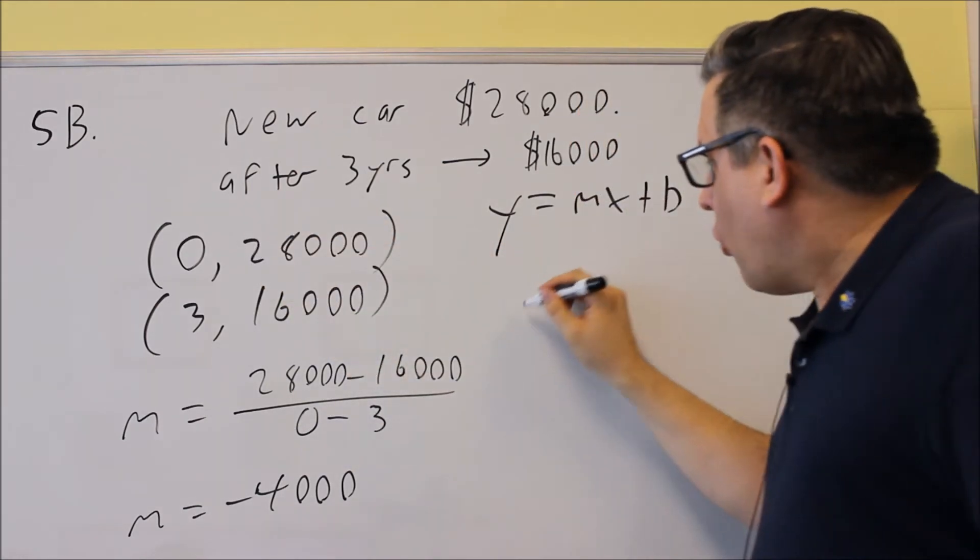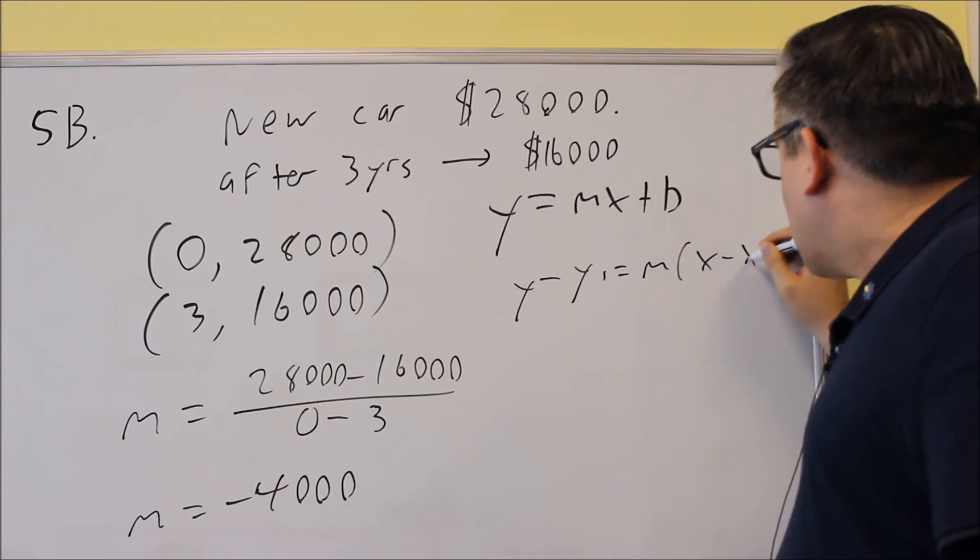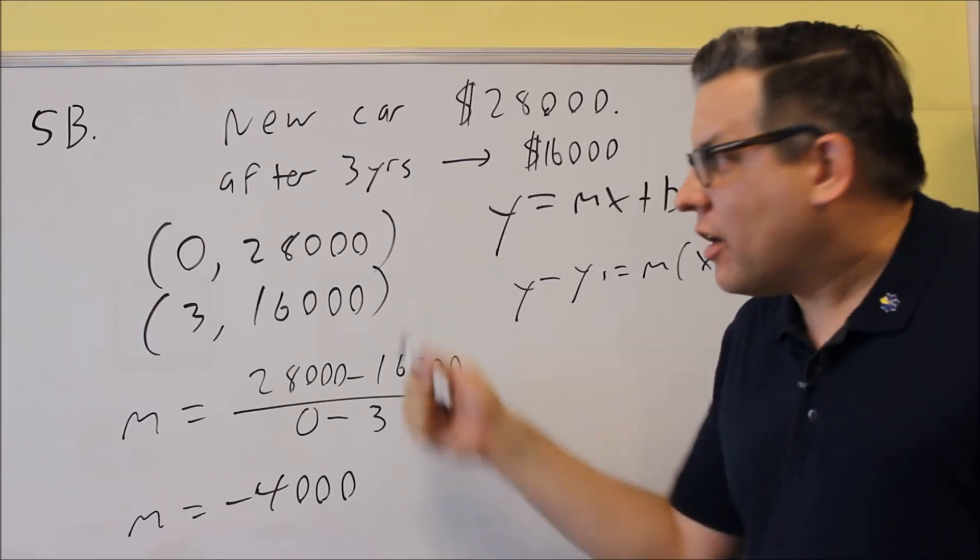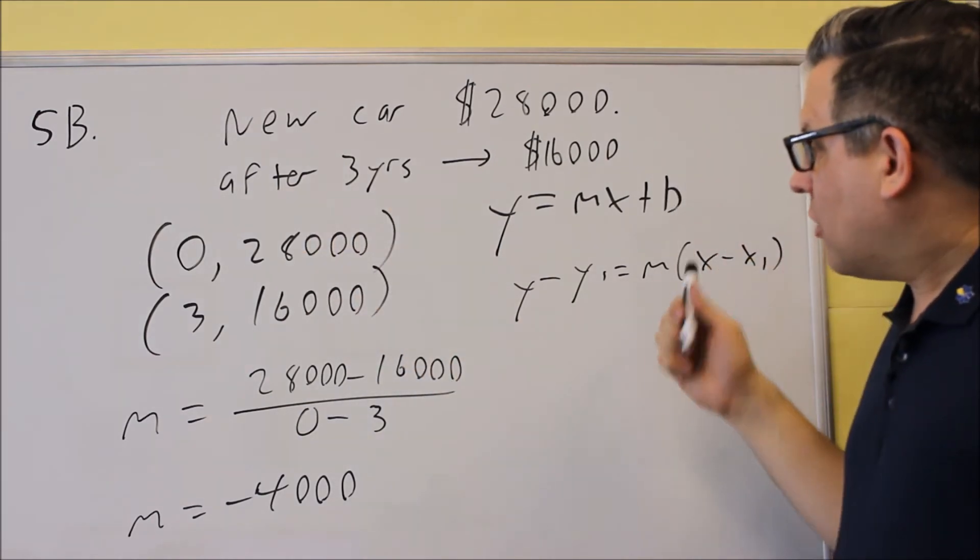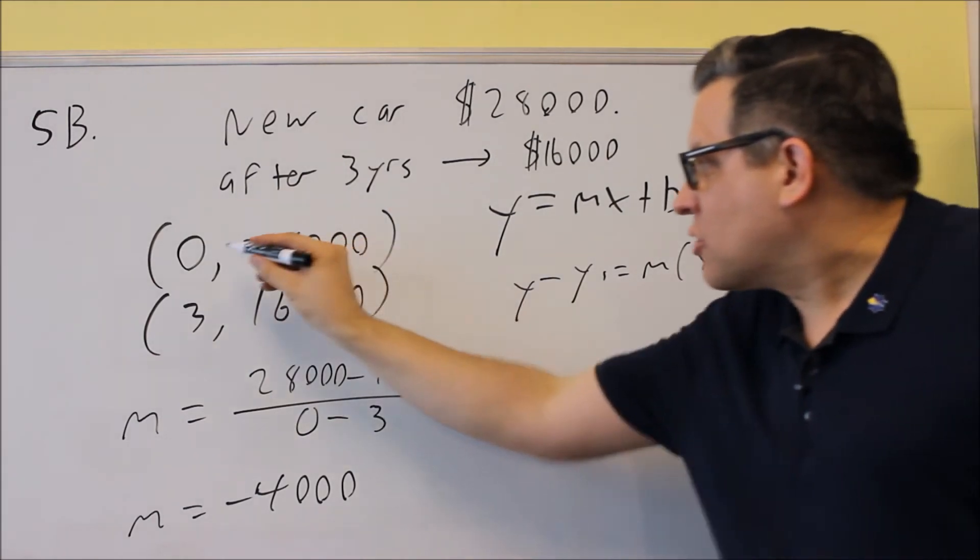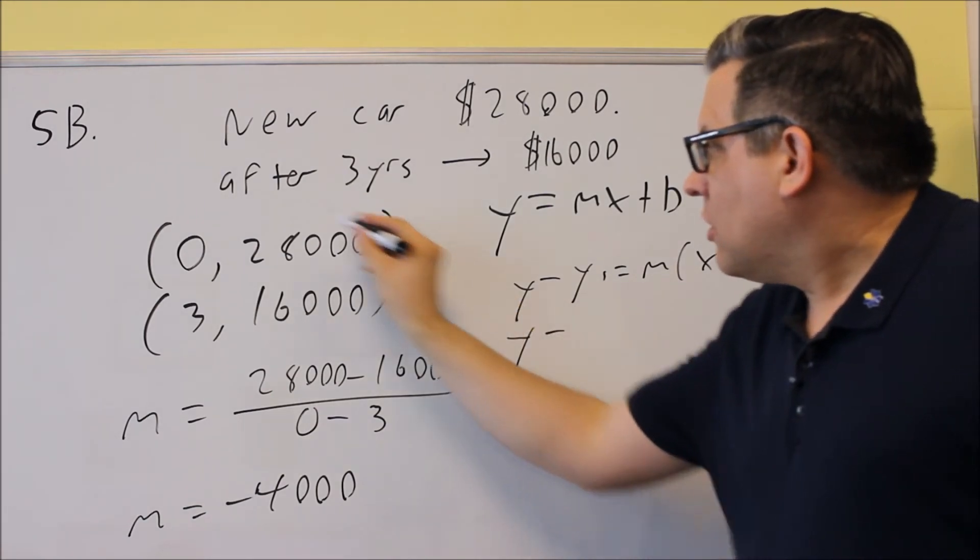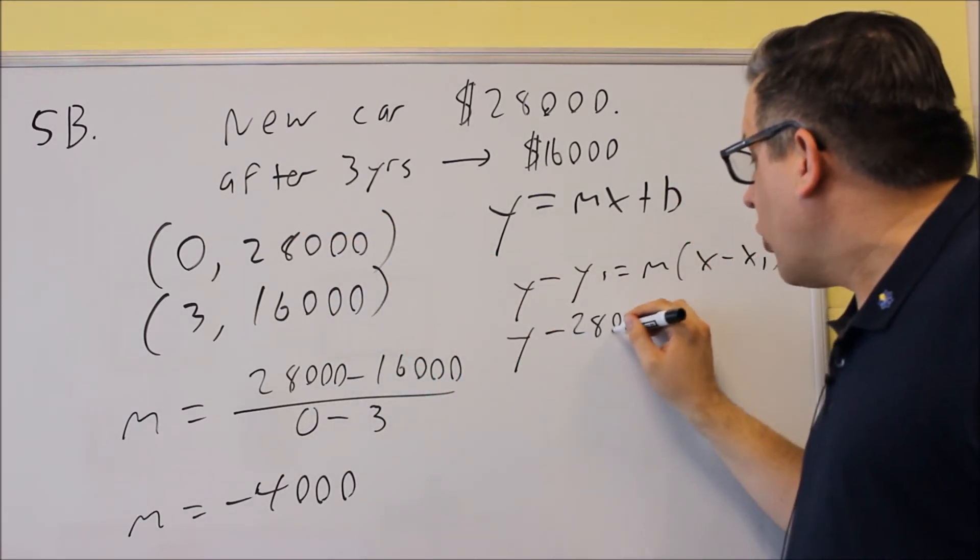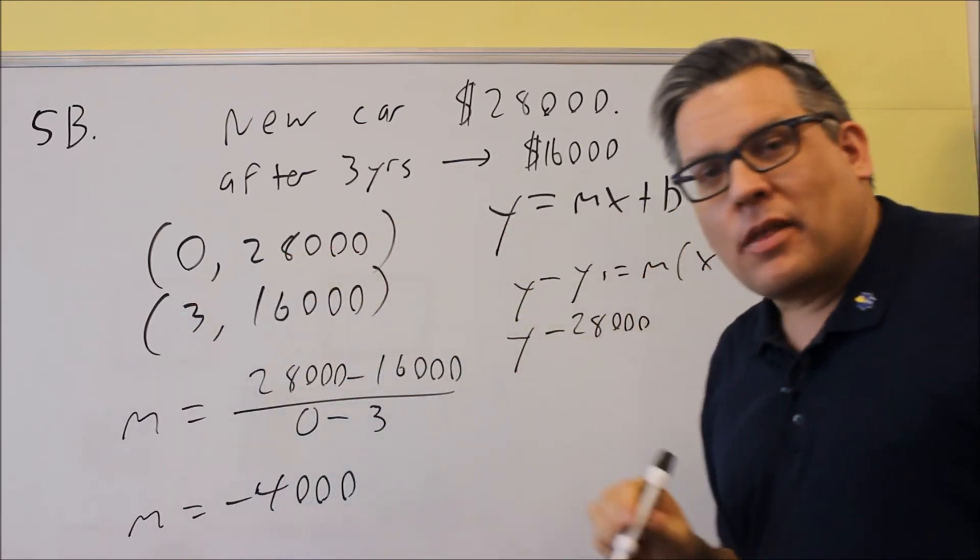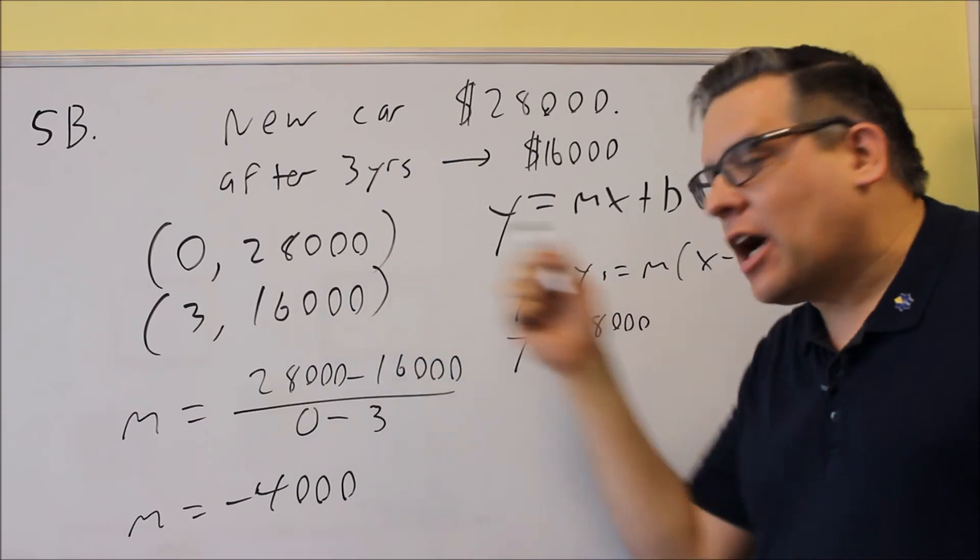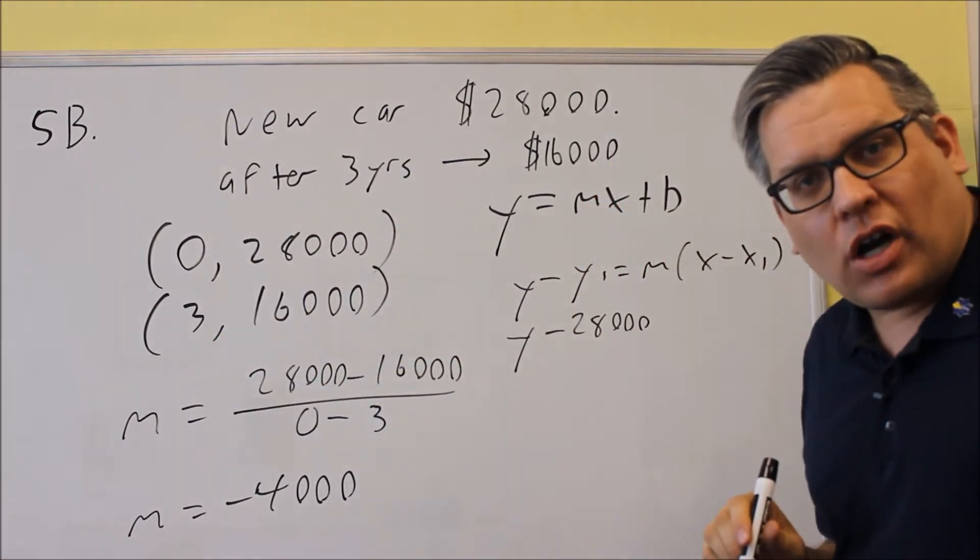We can use point-slope formula. We'll use the point (0, 28,000). We do y minus 28,000. You could also use either point—the second point would work too—but I'm using this one because it's easier with a 0.